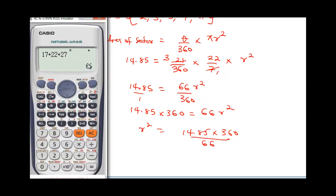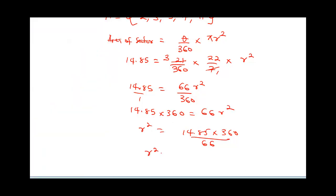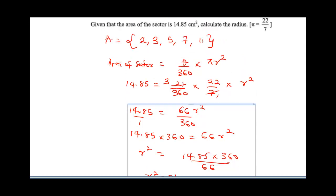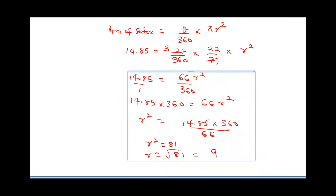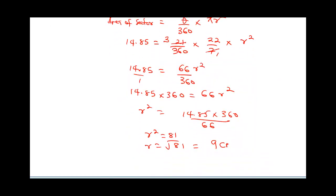Let's bring in our calculator so we can punch this. This is going to be 14.85 times 360, divided by 66. So our r squared equals 81. Therefore our r is going to be square root of 81 and that gives us 9. So our radius is going to be 9 cm, that's the final answer.